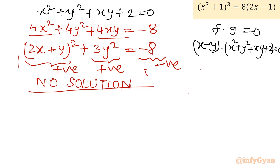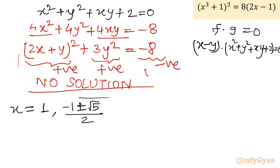In conclusion, we have three real solutions, each with multiplicity 3: x = 1, x = (−1 + √5) / 2, and x = (−1 − √5) / 2. I hope you liked this video. Thank you so much for watching — don't forget to like, share, and subscribe. Bye-bye till the next video.